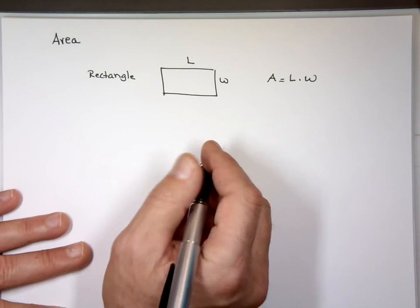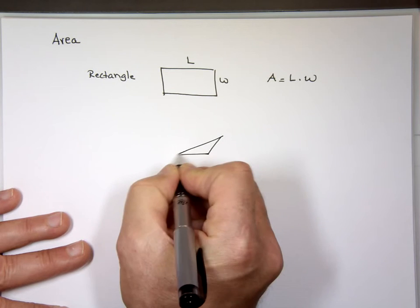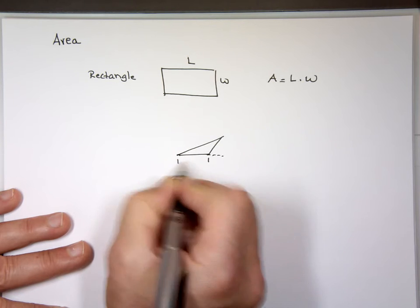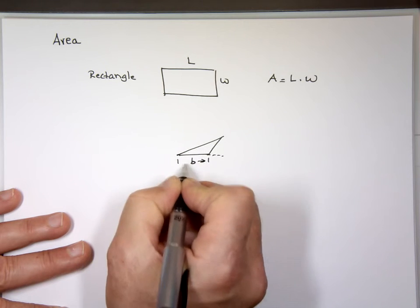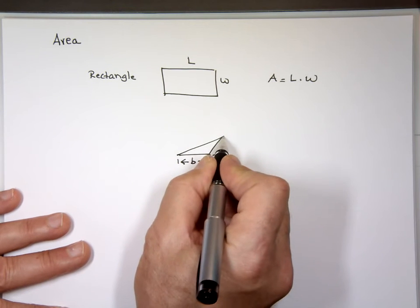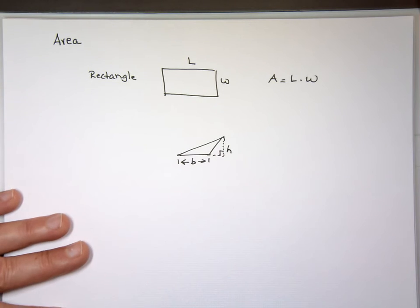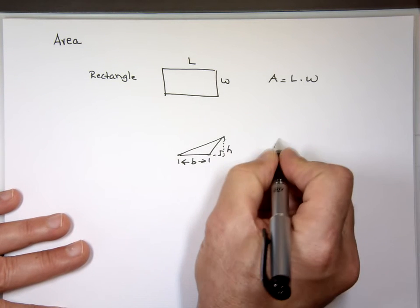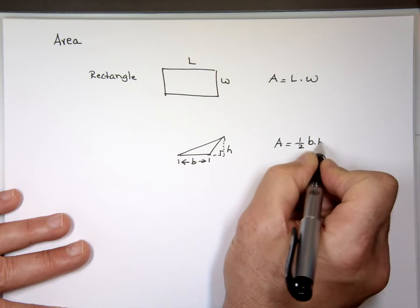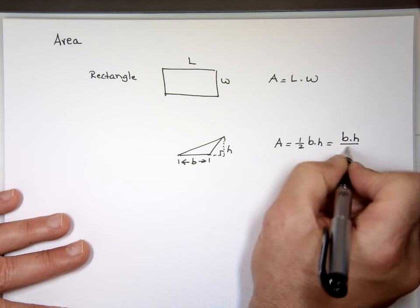If your shape is a triangle, I'll do some examples. A triangle could look like this. In this case, this is the base from here to there. The height always makes a 90 degree angle with the base, so this is the height. The area of that is one half times the base times the height, or base times height divided by two.